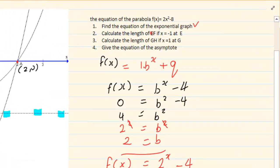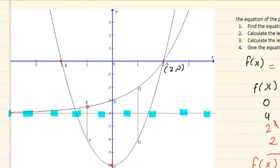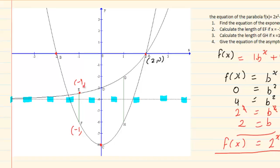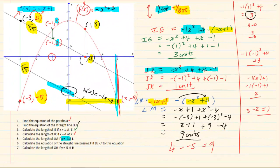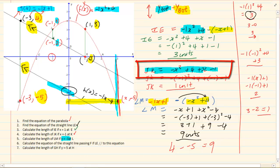Now when they say calculate the length of EF if x is equal to minus 1. Now on E we know x is minus 1 and we know on F x is minus 1. I told you when it's straight line graphs and parabolas I'd like you to do the subtraction. When you're doing the parabola and the straight line I'd like you to take the top graph minus the bottom graph. Now that is for graphs that are quite easy to calculate. So we're saying top minus bottom.